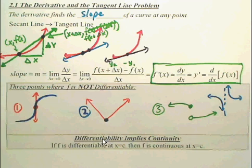A very important thing: differentiability implies it's continuous, meaning if it's differentiable, it's continuous. But the inverse doesn't work. If it's continuous, it doesn't mean it's differentiable. So this is continuous but it's not differentiable.